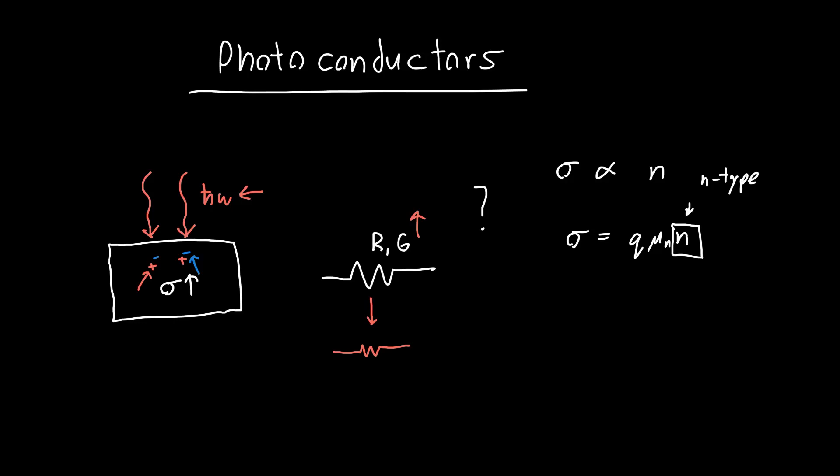For simplicity we're going to ignore the holes, which is basically the same as assuming that mu_n is much larger than mu_p. We're just ignoring them for simplicity so we can get an intuitive sense for what's going on inside this photoconductor.